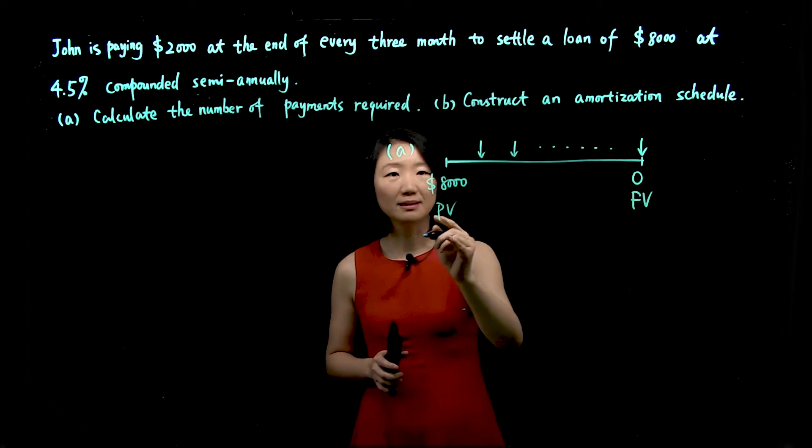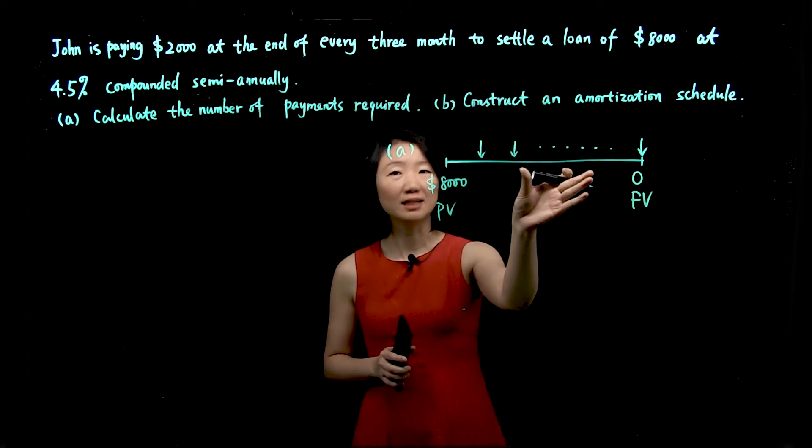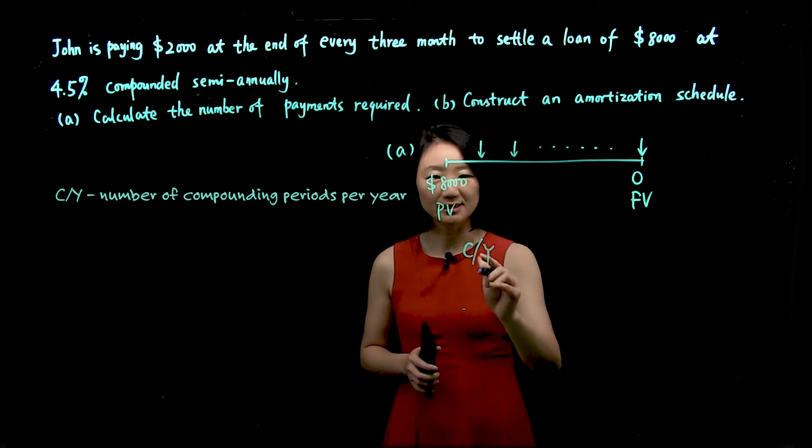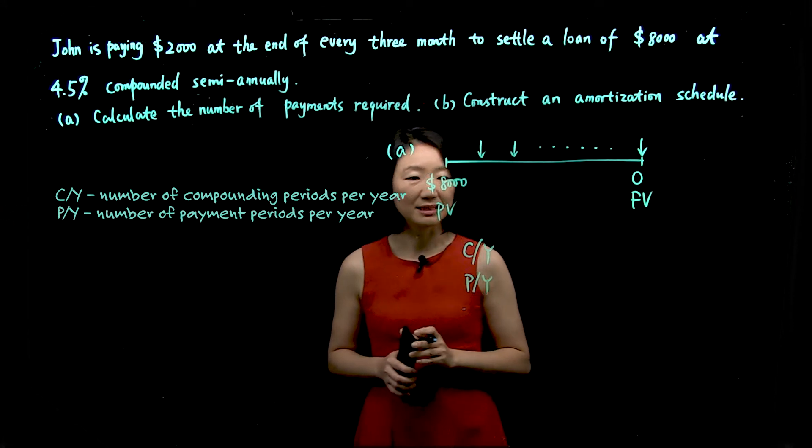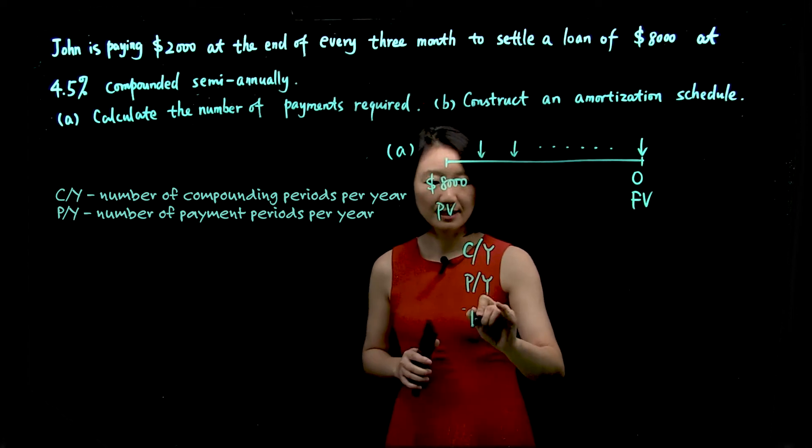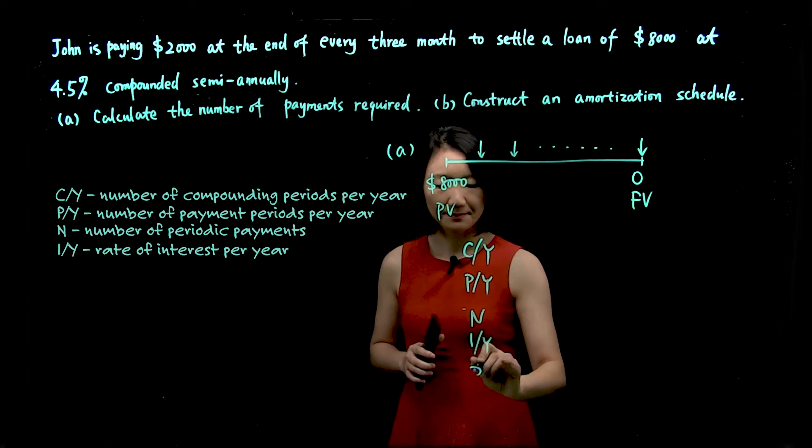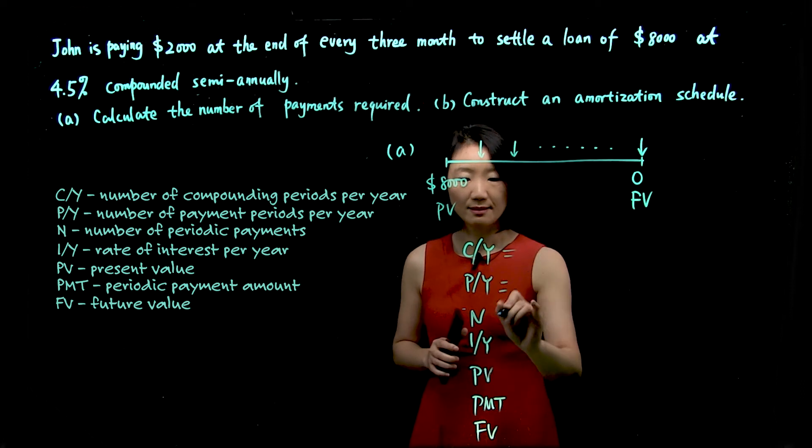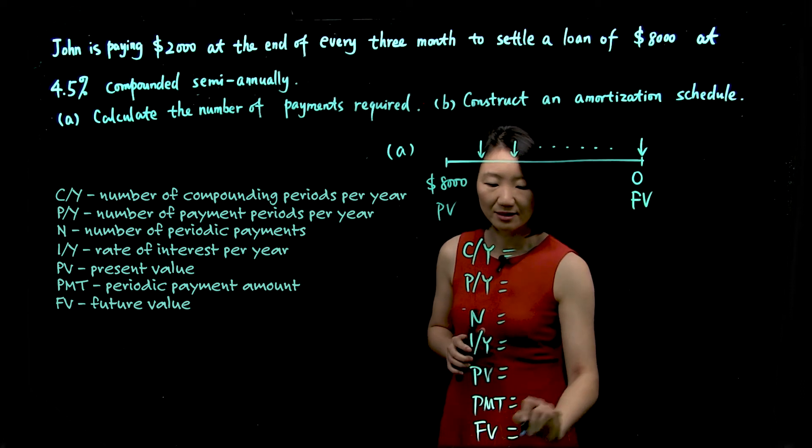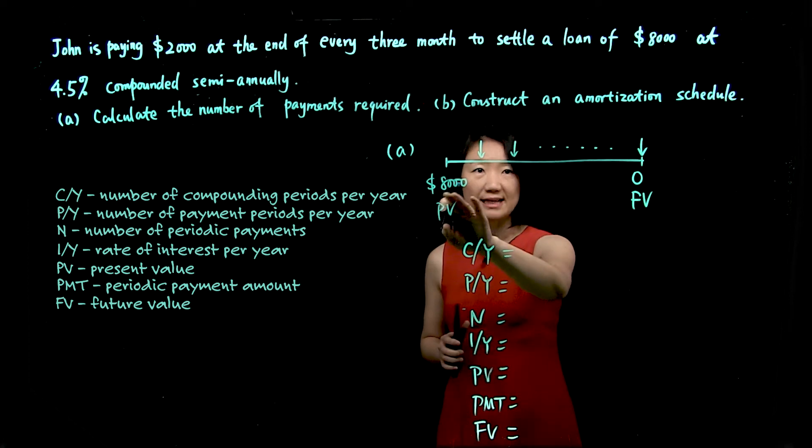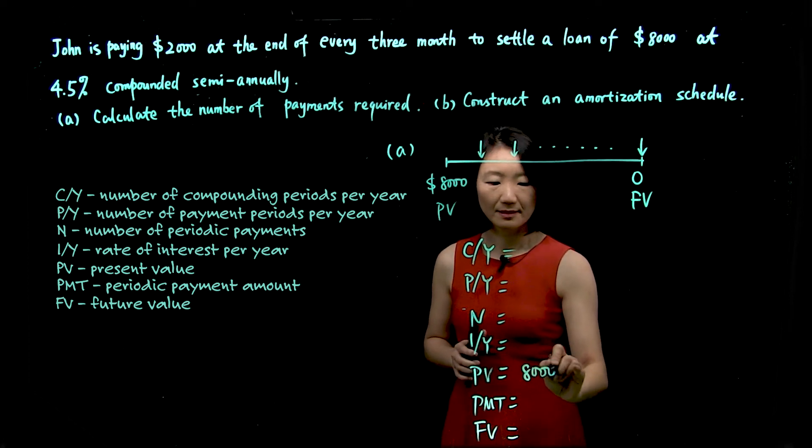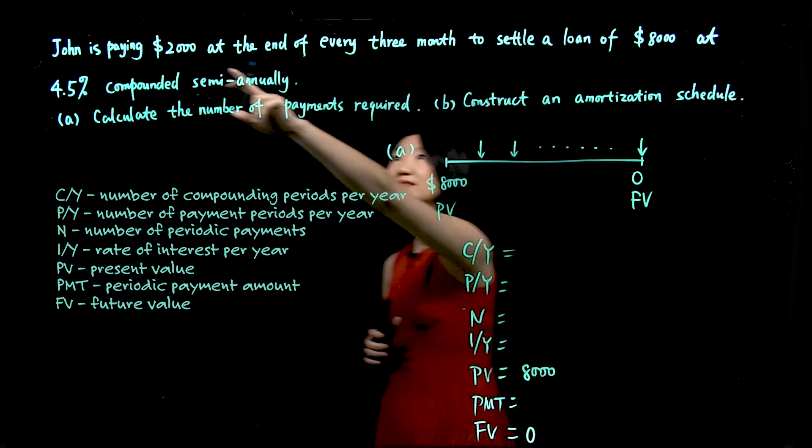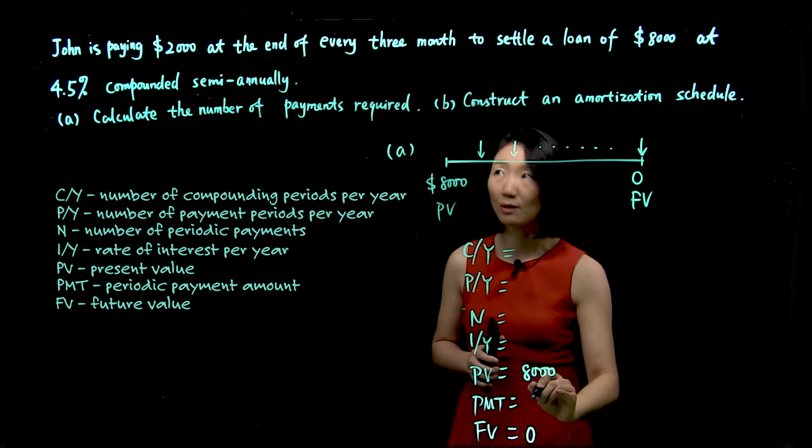In order to solve this problem, to find how many payments he will need to settle the loan, we will need seven variables: CY compounding per year, PY payment per year, and these five buttons on this row: N, IY, PV, PMT, and FV. We need to identify all these values. We already know the present value is $8,000 and the future value is zero. Periodic payment, he makes $2,000 at the end of every three months, so it's $2,000.